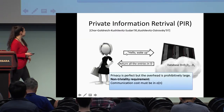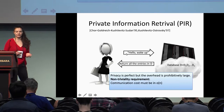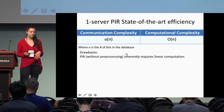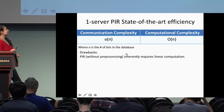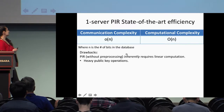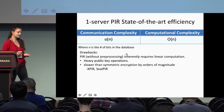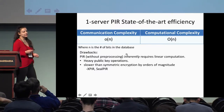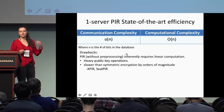We have the non-trivial requirement that we want communication complexity to be sublinear in the input size of the database. Based on the current state of the art on single-server PIR protocols, they require sublinear communication complexity but require a lot of computational complexity. And this is inherent even with pre-processing, and it even requires a lot of public key operations.